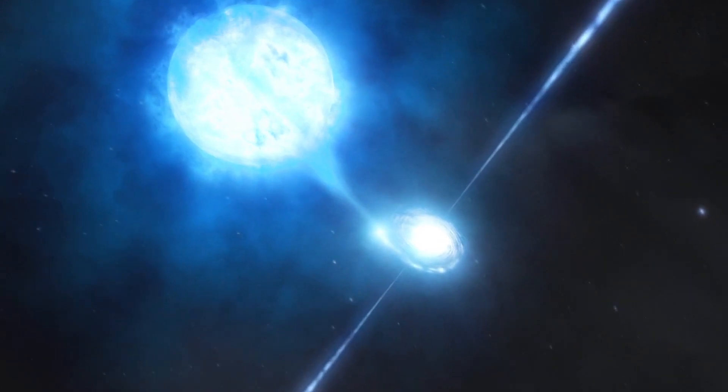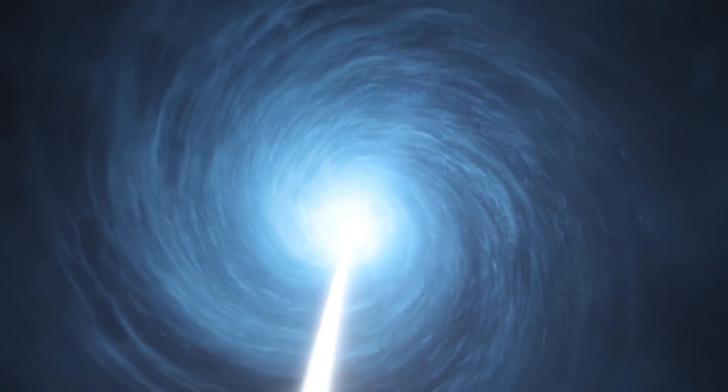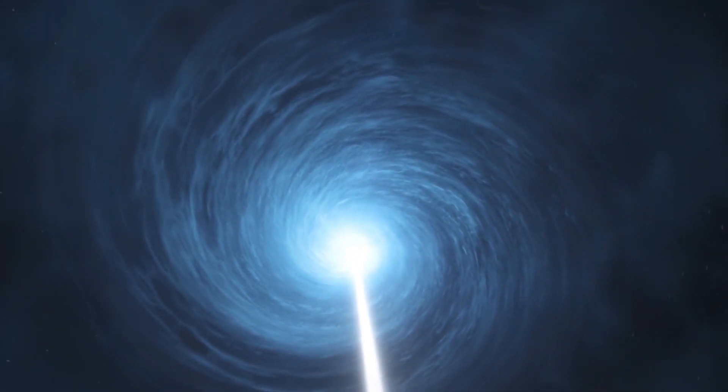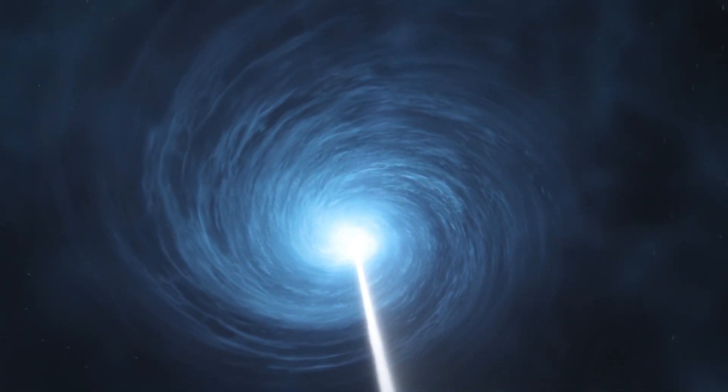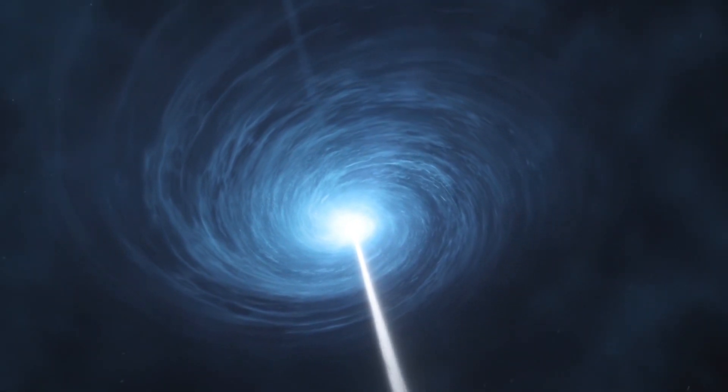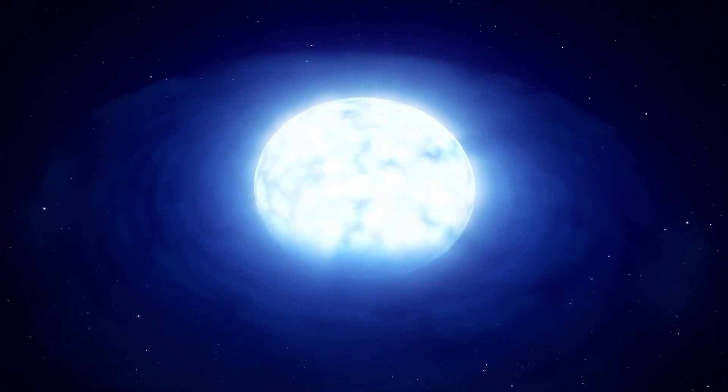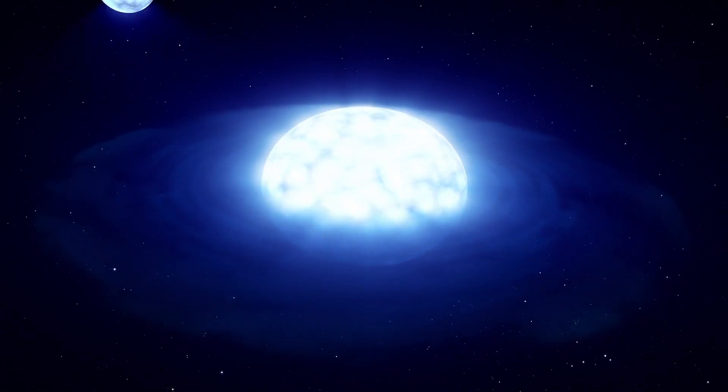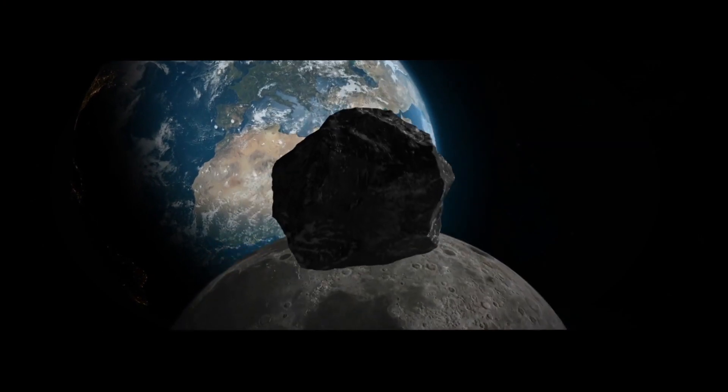Neutron stars emit an incredibly high amount of radiation in the form of X-rays. If one of these stars were to visit our solar system, we could be at risk of extinction even before it reaches us due to its intense radiation. Even if we somehow survive the radiation, the strong gravitational force of the neutron star could make our solar system unstable, throwing planets and asteroids out of their orbit.